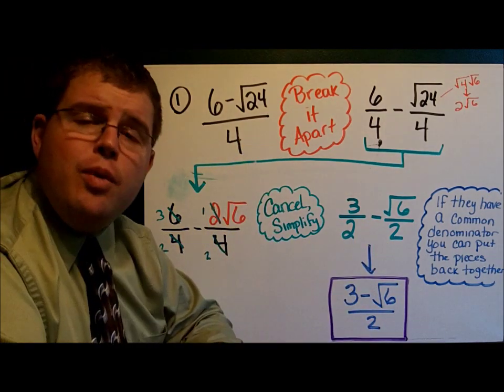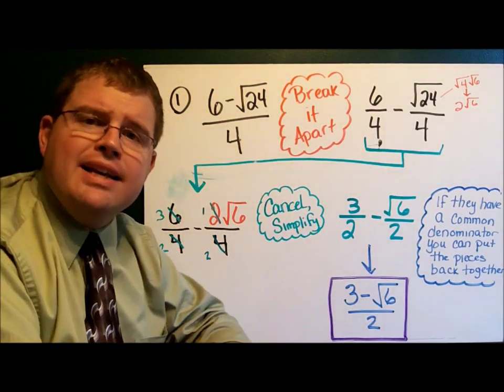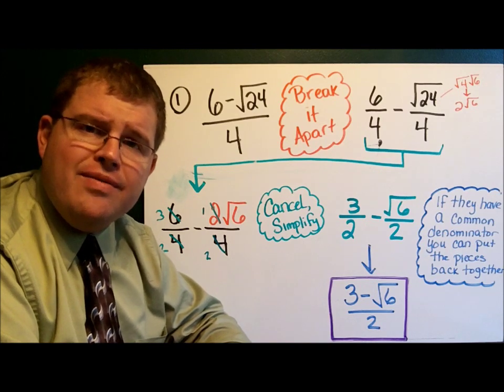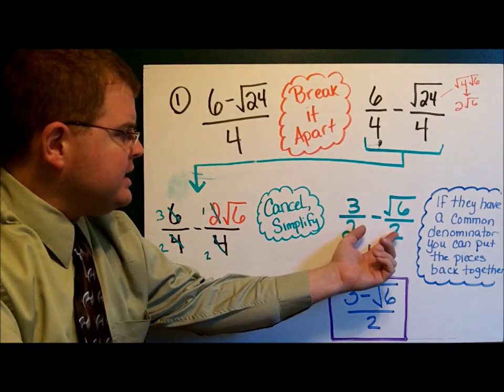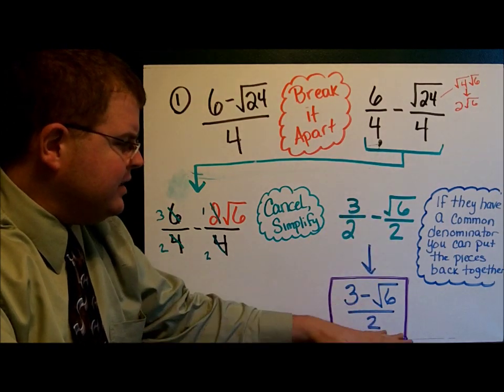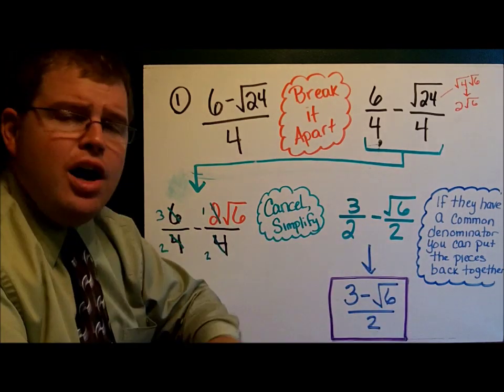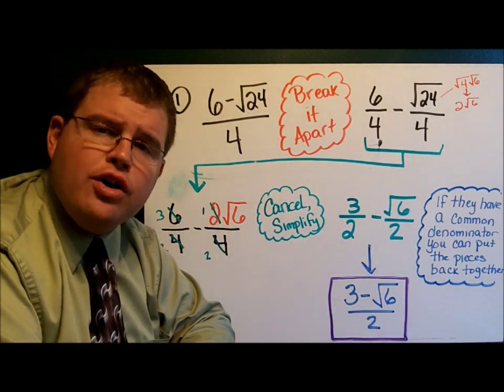Now if you want to be fancy, if you have a common denominator, you can put the pieces back together. Whenever you have that common denominator, you just push everything together. 3 minus the square root of 6 all divided by 2. Both this and this are mathematically equivalent and are correct.